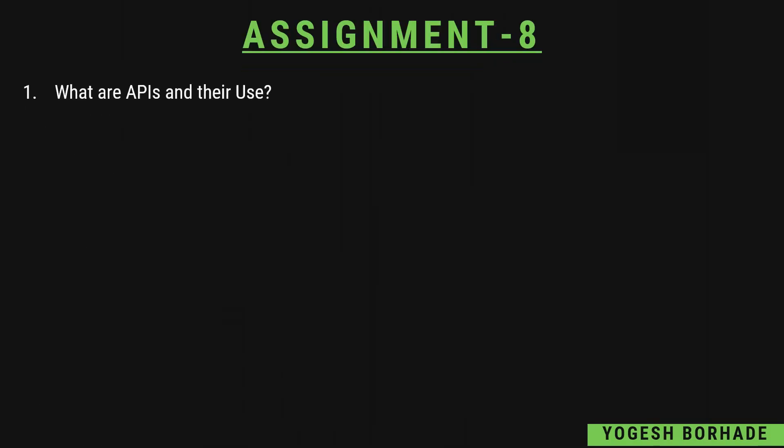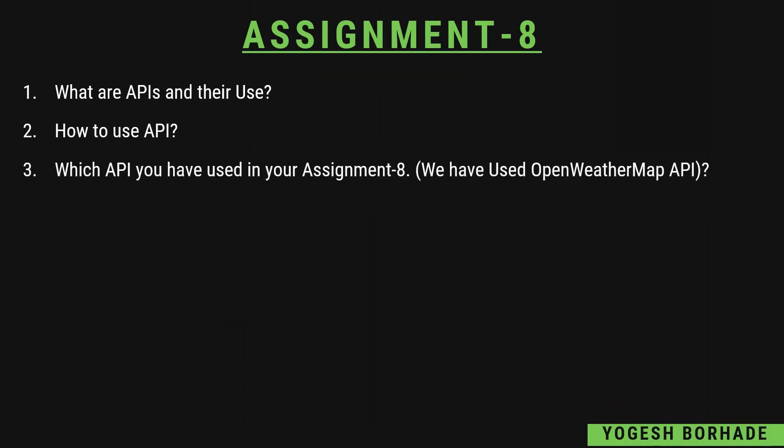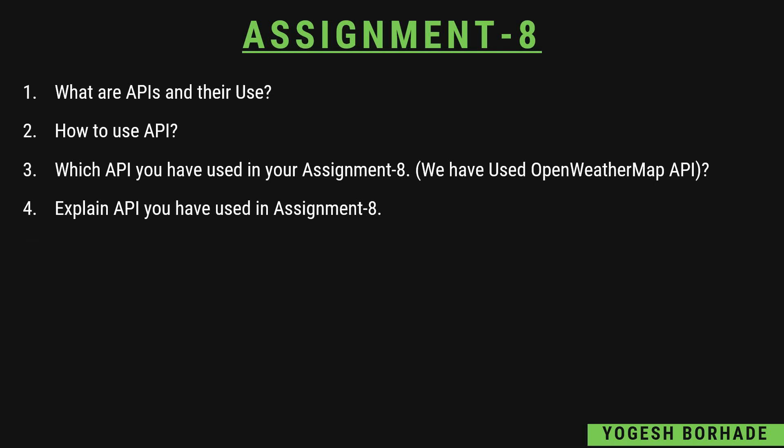Assignment eight is about APIs — what are APIs and what are their uses, how to use an API, and which API you have used in your practical. We have used the OpenWeatherMap API in Python. Explain the API used in assignment eight with four to five lines of description about the OpenWeatherMap API, and mention what information from that API can be displayed to the user.